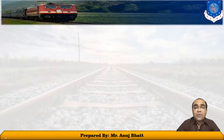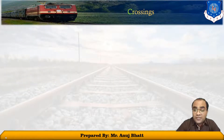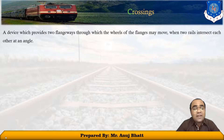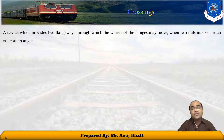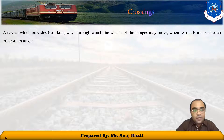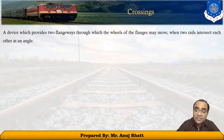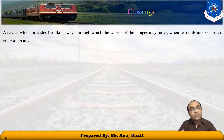Now let's discuss the different types of crossings. A crossing is a device which provides flangeways through which the wheels of flanged vehicles may move when two rails intersect each other. The components of a crossing include the V-points, wing rails, check rails, chairs, and blocks.